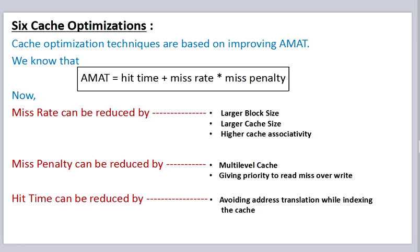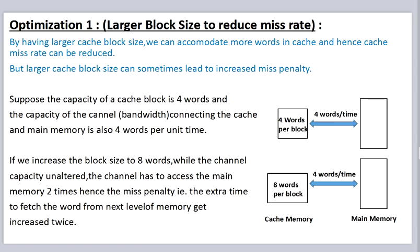The first optimization is larger block size to reduce miss rate. By having a larger cache block size, we can accommodate more words in cache, hence cache miss rate can be reduced.